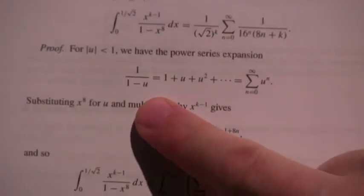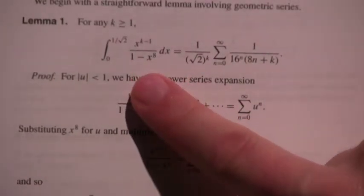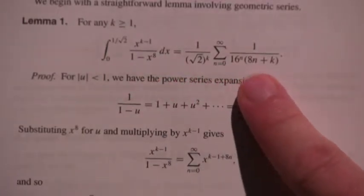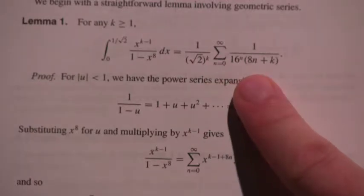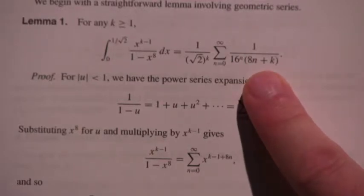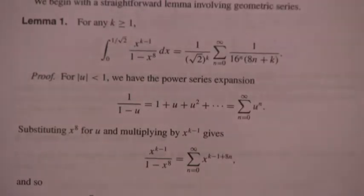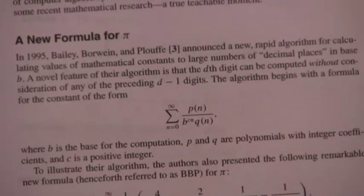In fact, you can see the 1 over 1 minus u series that we looked at. So she proves that this integral actually equals this sum. 1 over the square root of 2 to the 4th times 1 over 16 to the n times the sum of 1 over 8n plus k. That's a k. Oh, sorry. They both create a k. Sorry, k. I'm far away from the camera. But yeah. So it equals this sum. And that's kind of reminiscent of this, but it only has one term.